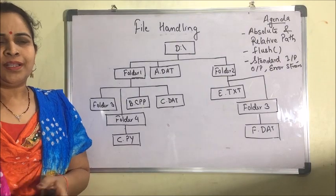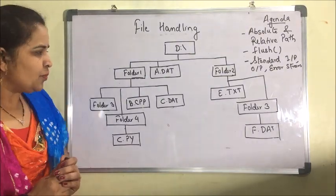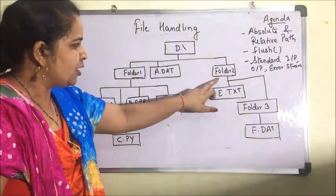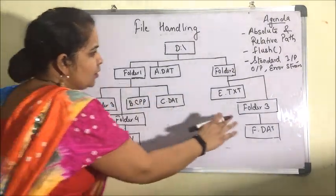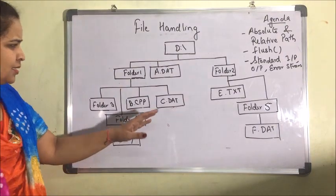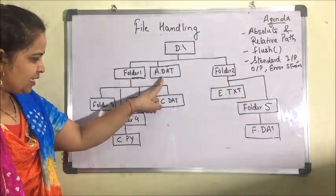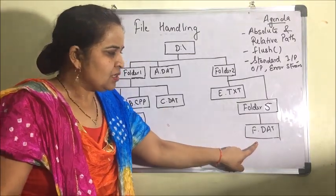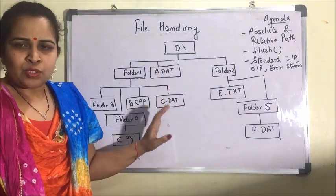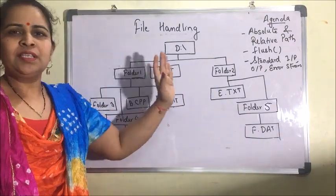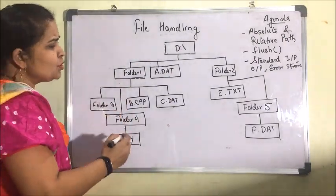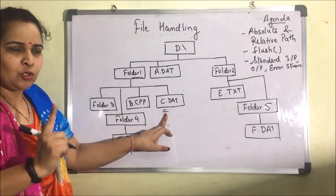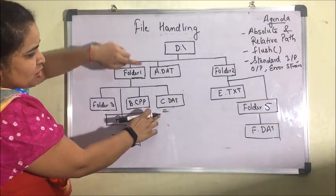Absolute path is the complete path of any file. Suppose I have drawn a picture of folders — folder one, folder two, folder three, folder four, and folder five — and these folders have different files: a.dat, c.cpp, b.cpp, c.dat, file.py. These are the files. Suppose you want to access a particular file.